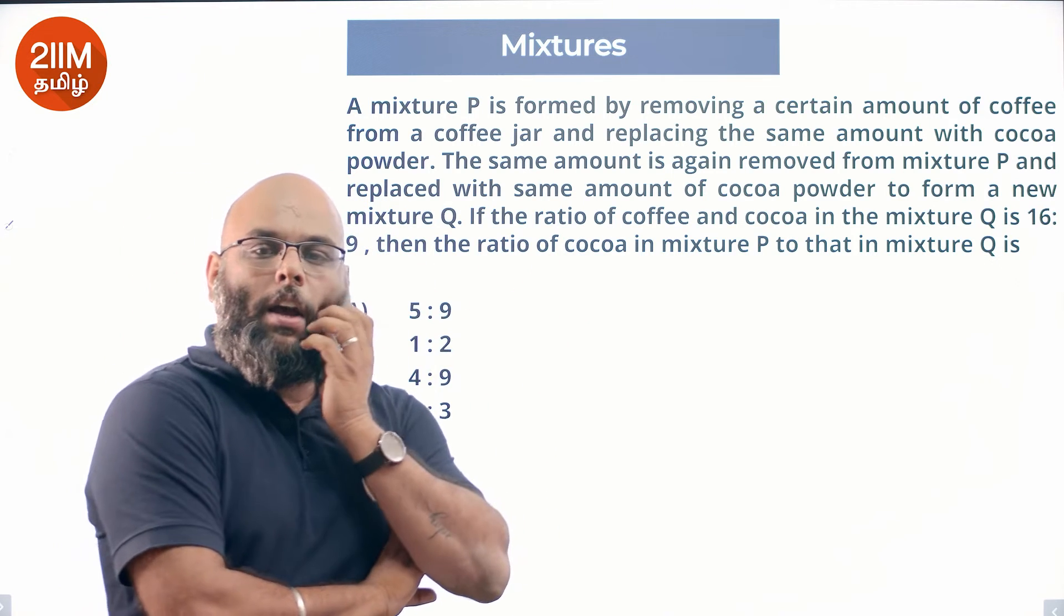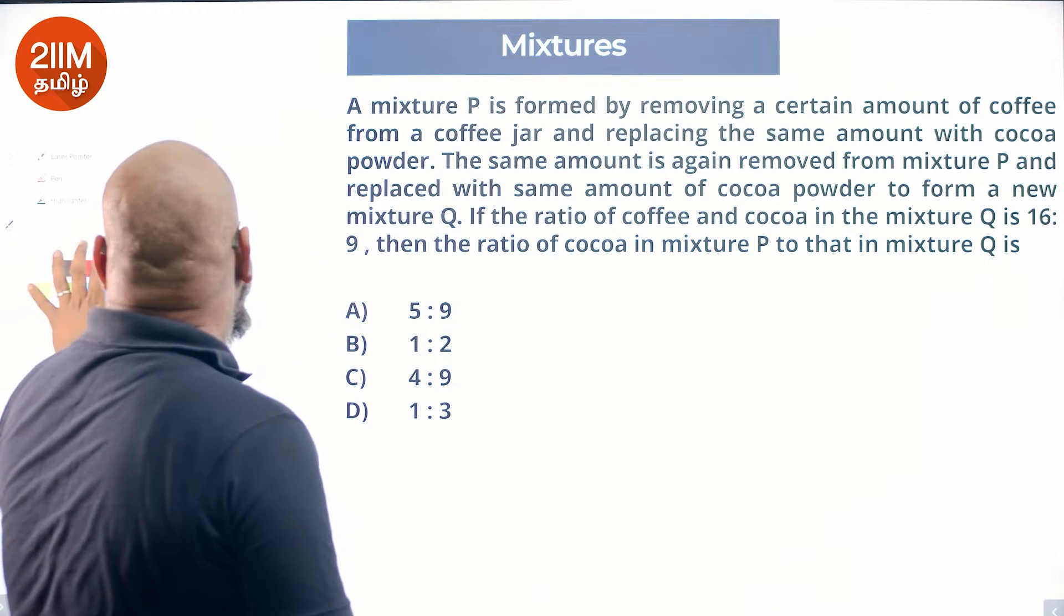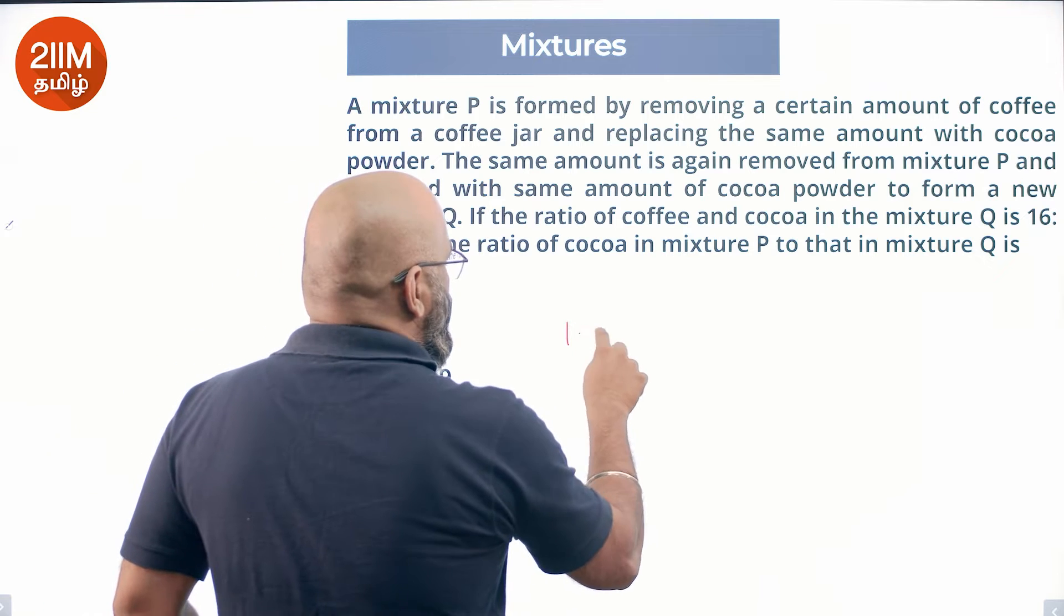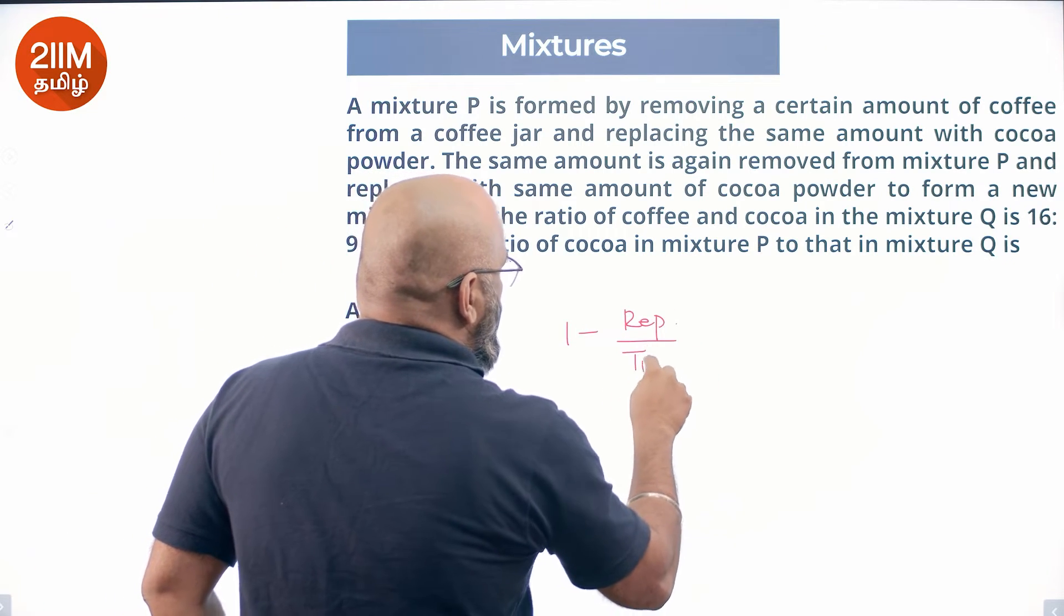P has the same amount of cocoa, the ratio of cocoa is equal. So, we will solve using the formula: 1 minus replace amount divided by total.